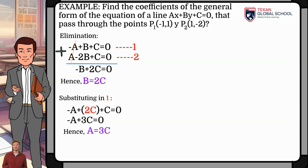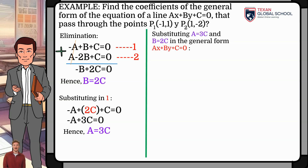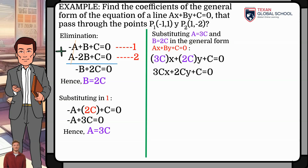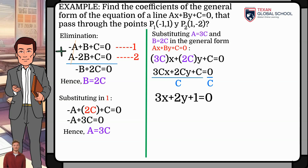Once the system of equations has been solved in terms of c, substitute the values obtained in the general form of the equation of a straight line. Obtaining in this case: 3cx + 2cy + c = 0. Since we have the same factor c in all terms, let us divide the entire equation by c so as not to alter it. In this way, the general form of the equation of the straight line given by the points P₁(−1, 1) and P₂(1, −2) is: 3x + 2y + 1 = 0.